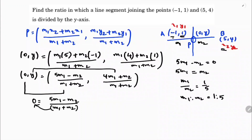In this question they did not ask for the point of division — just the ratio 1:5, so the answer is done. But just in case they ask for the point, we need to find the value of y.